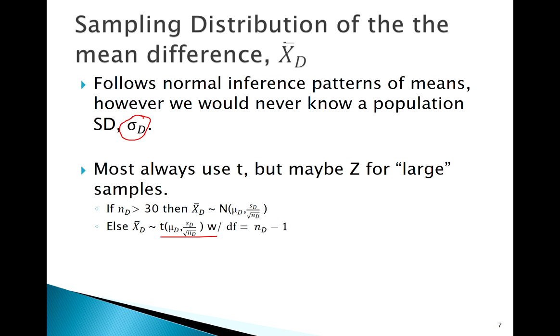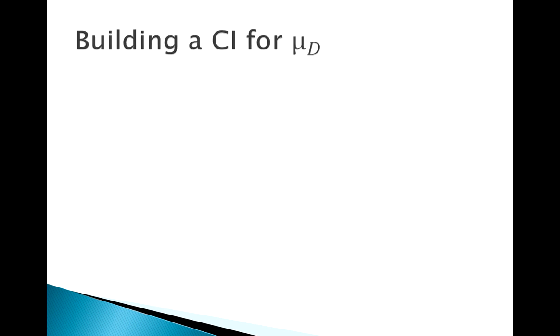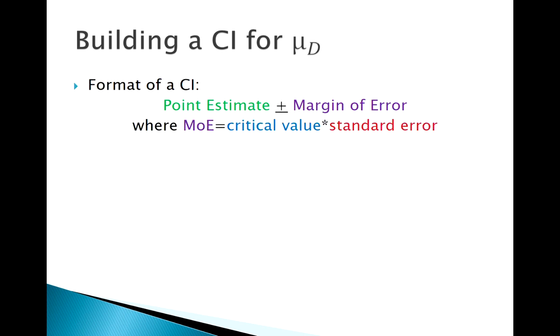We're thinking we're going to be using a t distribution for matched pairs. We want to apply these inference techniques. Let's start with confidence intervals. How do I use all these ideas to make a confidence interval? We know the basic format of a confidence interval: point estimate plus or minus margin of error. Margin of error is made up of critical value times the standard error.